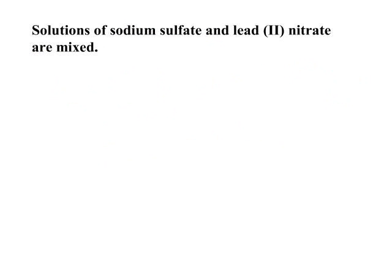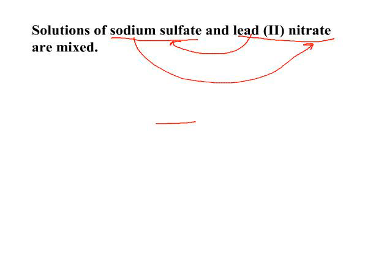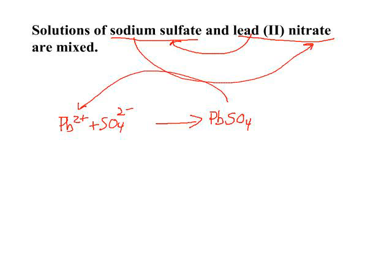Let's look at one last equation and take a shortcut. Once you get really good at this, you won't need to go all the way through the complete ionic equation. We've got solutions of sodium sulfate and lead(II) nitrate. We know we're going to make sodium nitrate and lead(II) sulfate. Using our rules, sodium nitrate cannot be the insoluble precipitate, so it's lead(II) sulfate, PbSO₄. We didn't even write the ions we knew were going to cancel — the sodium and nitrate ions. We simply work backwards and write the two ions that make up this precipitate. You identify the precipitate, write the ions, balance for atoms and charges, and you're done with the net ionic equation.